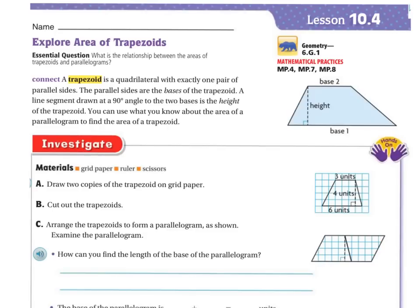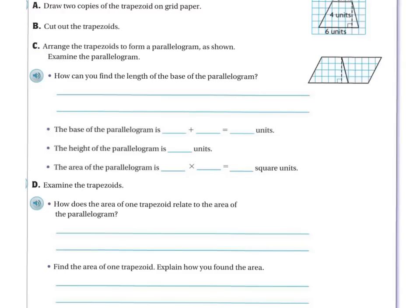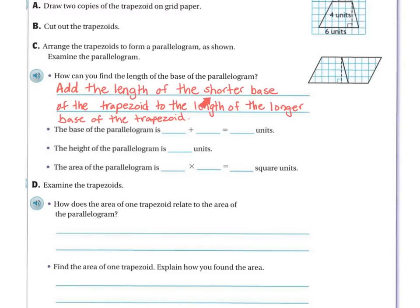What they did is, where that perpendicular line was, they cut it and then moved it to the other side. So how can you find the length of a base of the parallelogram? You can add the length of the shorter base of the trapezoid to the length of the longer base of the trapezoid.